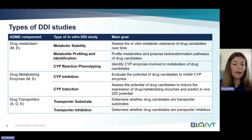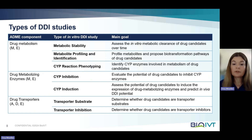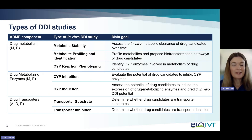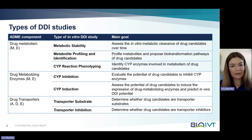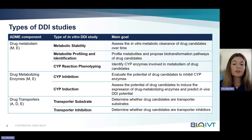For drug metabolism, there are three main study types. Metabolic stability assesses the in-vitro clearance of the drug. Then there is metabolite profiling and identification, which, as the name suggests, profiles the metabolites and can propose biotransformation pathways of drug candidates. Last, we have reaction phenotyping, which identifies CYP enzymes that are involved in the metabolism of the drug candidates.